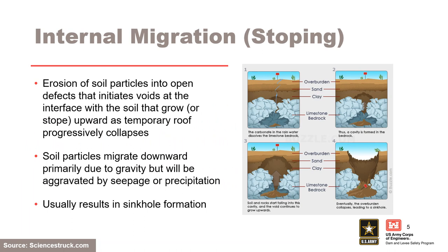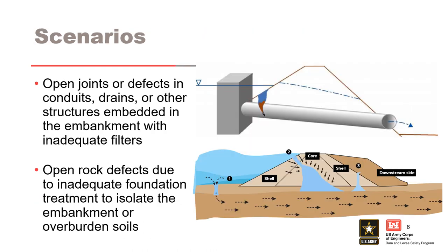Internal migration occurs when soil particles move or drop into an open defect. Soil particles that drop to the bottom of the void are carried away by seepage to an unfiltered exit. If extensive void space exists in coarse soils or bedrock, an open exit may not be needed, but sufficient storage space for eroding particles must be available. The process is repeated progressively, causing the void to enlarge and migrate vertically upward. Internal migration can also occur if there are open joints or defects in conduits, drains, or other structures that are not filtered, or if there are untreated rock defects in the foundation.